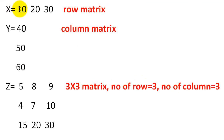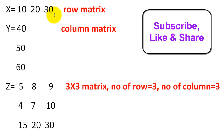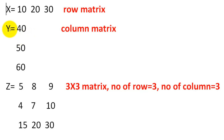There is a TH matrix, X matrix, this is rho matrix, Y matrix, this is column matrix, Z matrix, this is TH into TH matrix. Number of rows equal to TH, number of columns equal to TH. X is rho matrix, element of the matrix is 10, 20, 30. Y is the column matrix, elements of the matrix are 40, 50, 60.